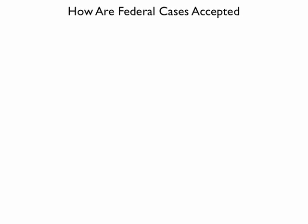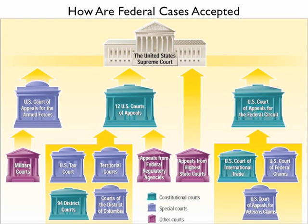What is the structure and jurisdiction of other constitutional courts? The federal court system includes the United States Supreme Court, constitutional courts, special courts, and other courts. The Court of International Trade hears civil cases arising out of tariff and other trade-related laws. The appellate court has nationwide jurisdiction and hears cases from several different courts, including the United States Court of International Trade, the United States Court of Federal Claims, and the United States Court of Appeals for Veterans Claims.